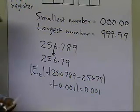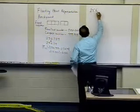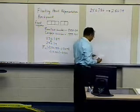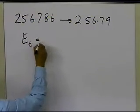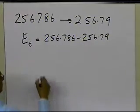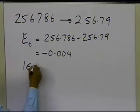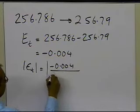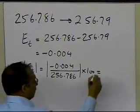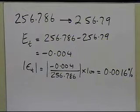Let's see what the absolute relative true error is. If I take a number like 256.786, that number will get represented as 256.79 in my fixed register. The true error will be 256.786 minus 256.79, which is minus 0.004. The absolute relative true error will be the true error divided by the exact value, which is 256.786, times 100, and this turns out to be 0.016%.